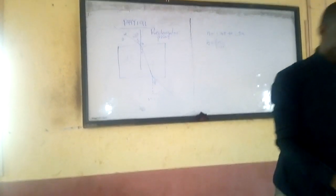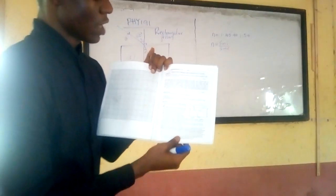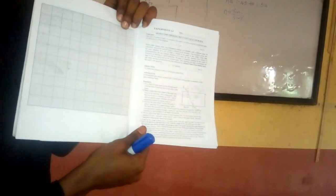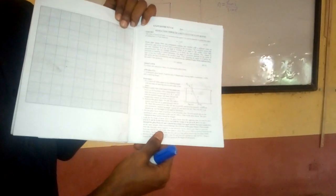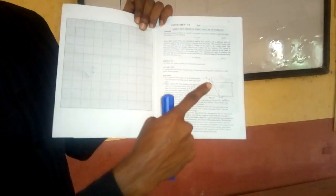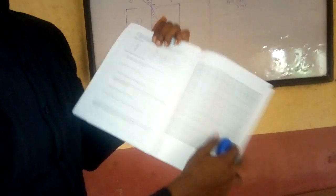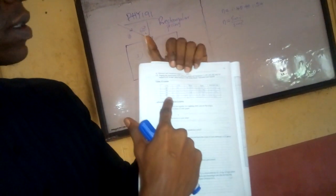Now we'll be using an experiment with a rectangular block prism. If you have a pen as you're watching, you should take down some notes so that you understand what we are doing. These are the procedures — you should read them because I won't be reading them out for the sake of time. This is the diagram we are expected to reproduce in the lab. I'll be doing this by calculation. This table has already been filled, but it is not actually correct, so I will be teaching you how to fill it.